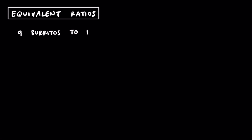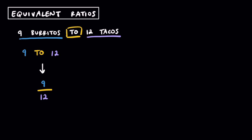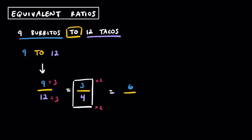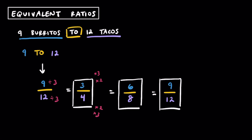Now let's talk about equivalent ratios. Suppose we have 9 burritos to every 12 tacos. We write the ratio as 9 to 12, then divide by the GCF of 3 to get the simplified ratio of 3 to 4 — 3 burritos for every 4 tacos. Just like equivalent fractions, we can multiply the top and bottom of a ratio to get an equivalent ratio. Multiplying 3 to 4 by 2 gives 6 to 8; multiplying by 3 gives back 9 to 12; and multiplying by 4 gives 12 to 16. These are all equivalent ratios.